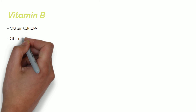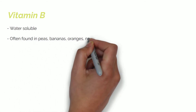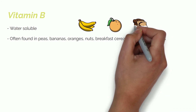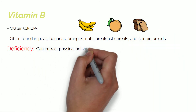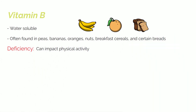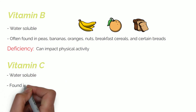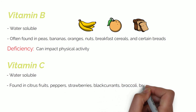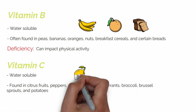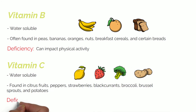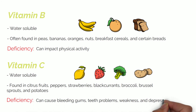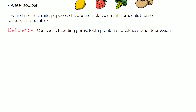Vitamin B is water soluble and it is often found in peas, bananas, oranges, nuts, breakfast cereals and certain breads. A deficiency of this vitamin can impact physical activity. Vitamin C is also water soluble and it is found in citrus fruits, peppers, strawberries, black currants, broccoli, brussel sprouts and potatoes. A deficiency of this vitamin can cause bleeding gums, teeth problems, weakness and depression.